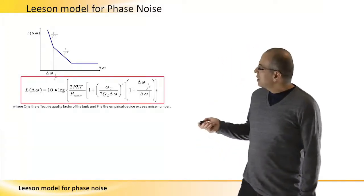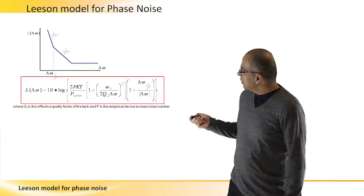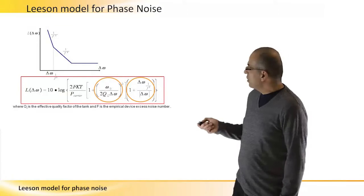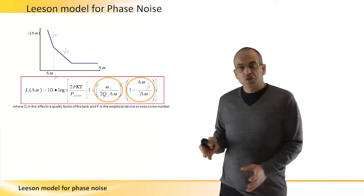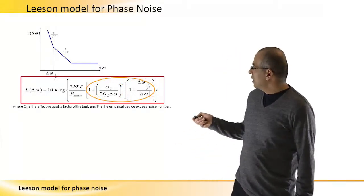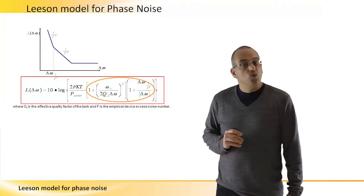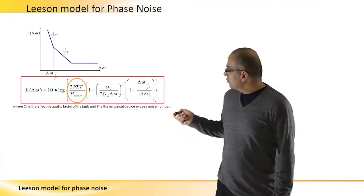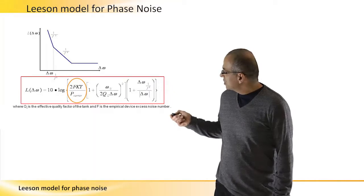In frequencies very far away from the carrier where delta w is large enough, we have delta w in this term here and we have it here. So when delta w is large enough this expression is really close to one and we just get the phase noise, the noise level that is constant with frequency.